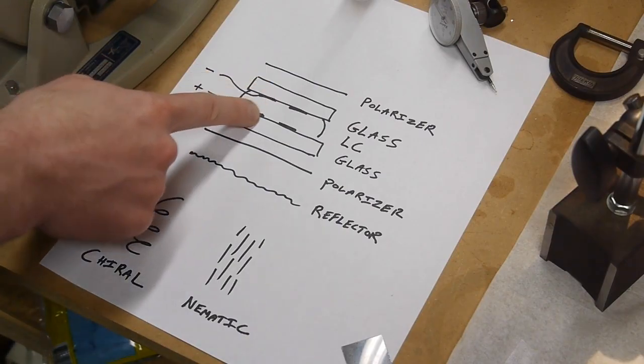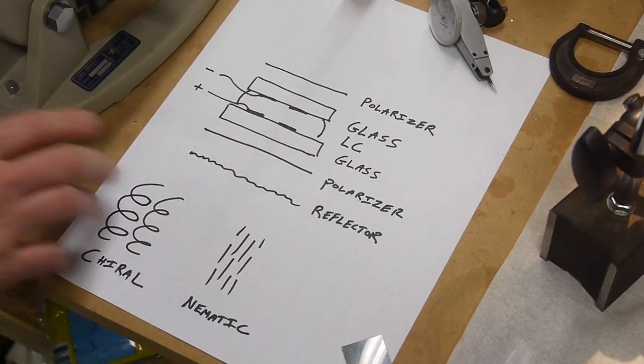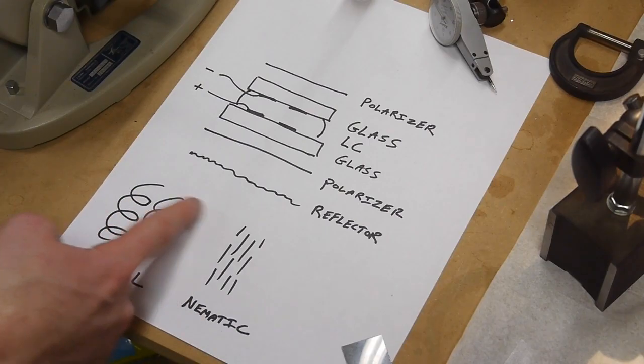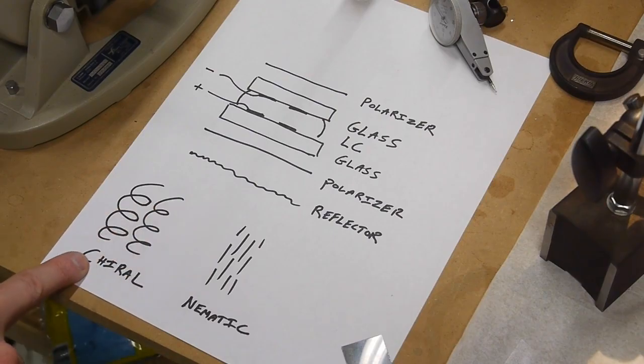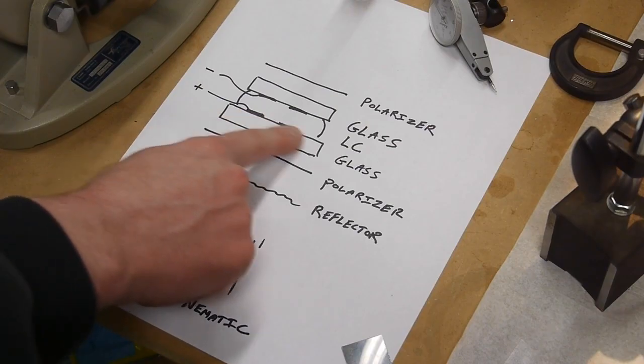Early on, the LCD researchers really wanted to find a way to get this 90-degree twist to happen in the liquid crystal layer. They figured out by mixing these two different kinds of liquid crystals together they could produce a cross between these two that had just the right amount of corkscrewing going on so that it would complete a 90-degree twist in this liquid crystal layer.